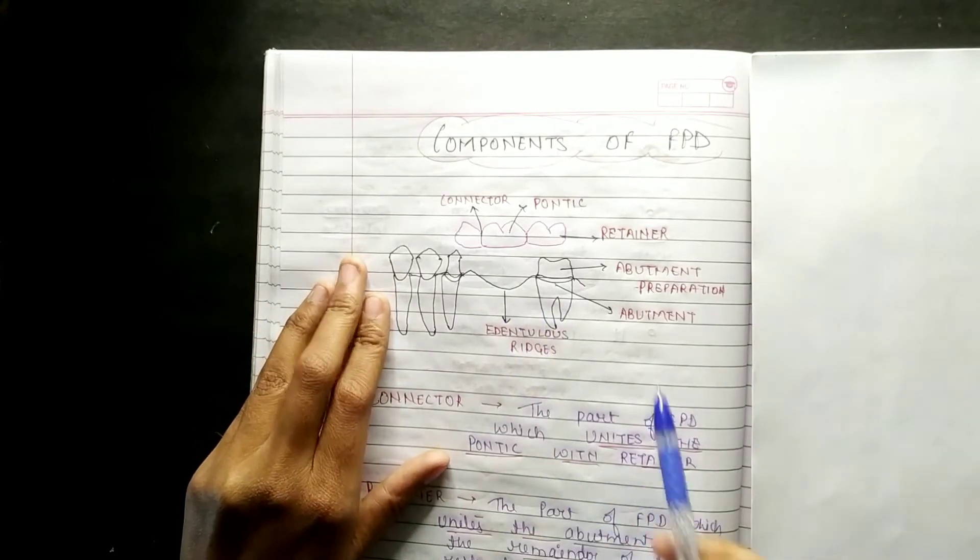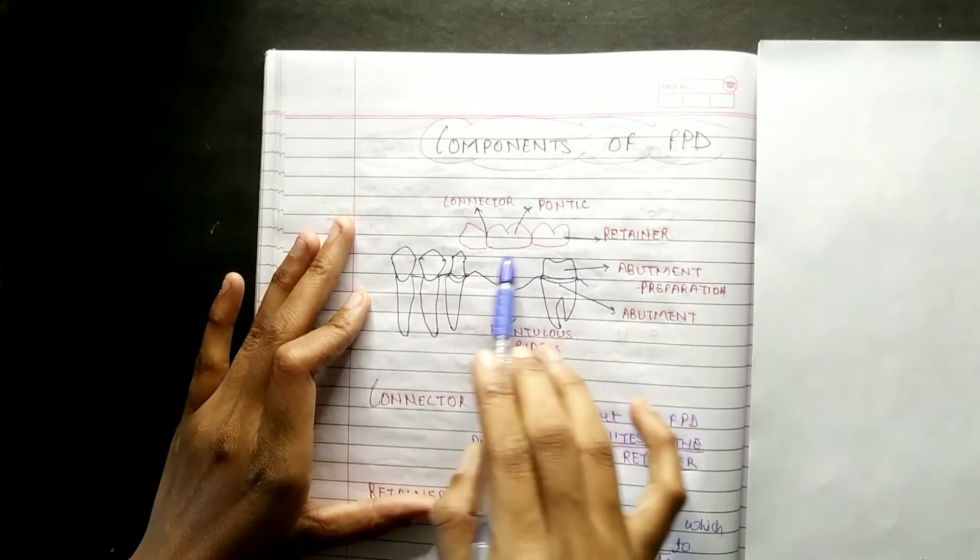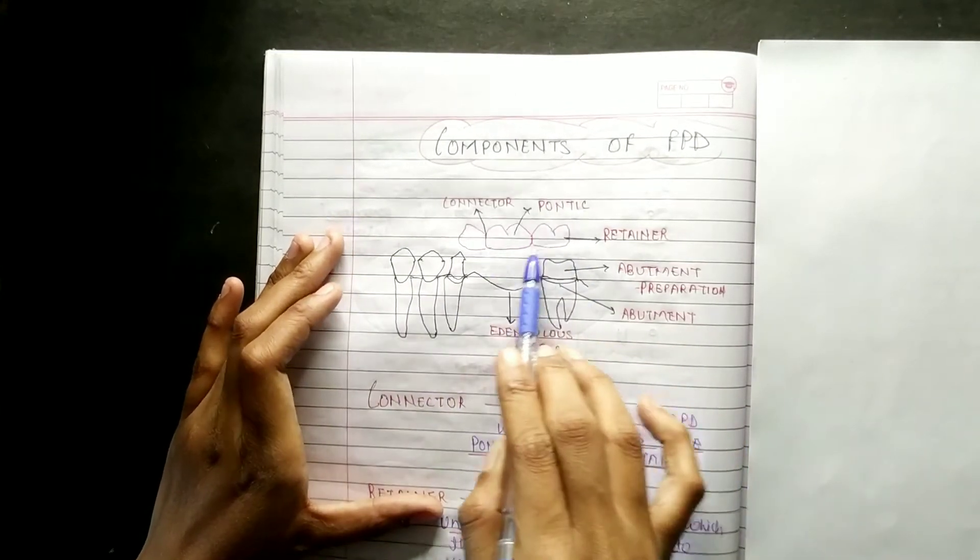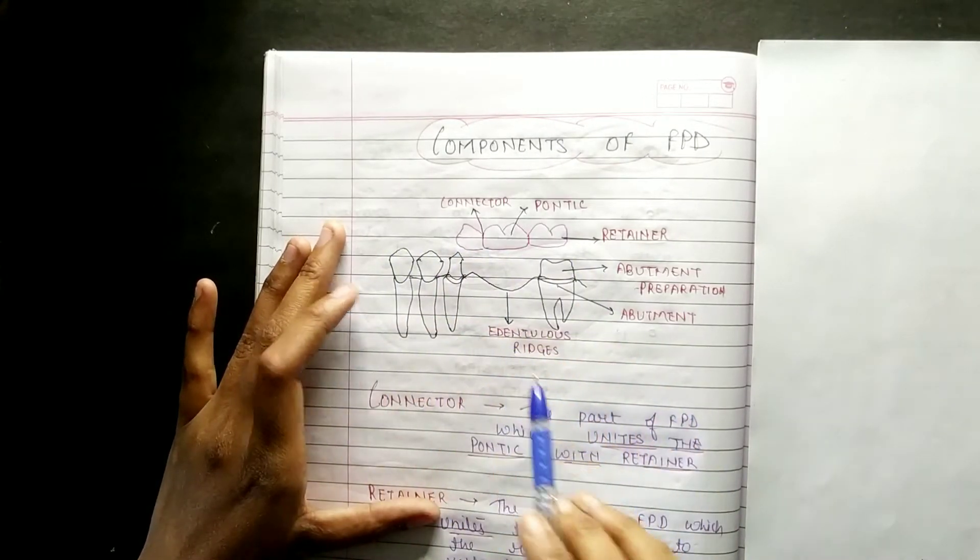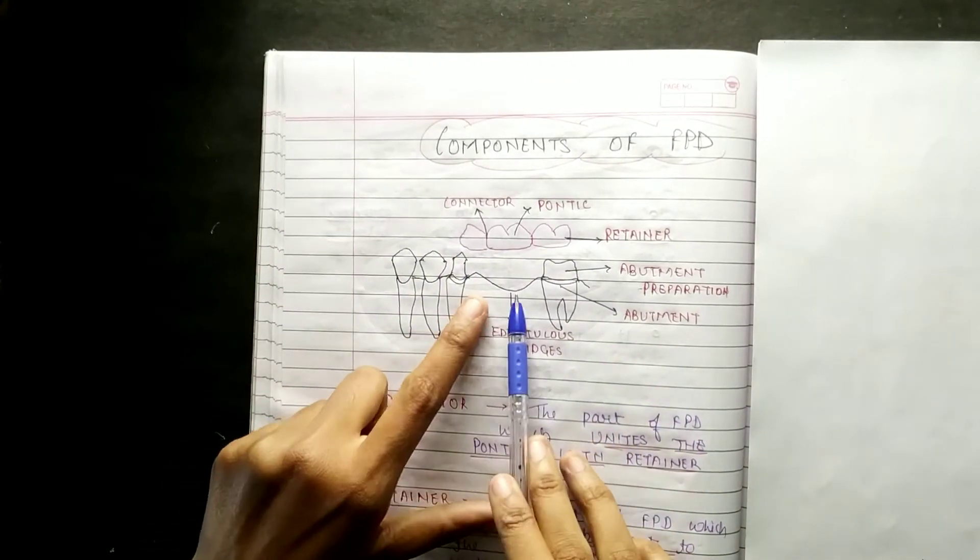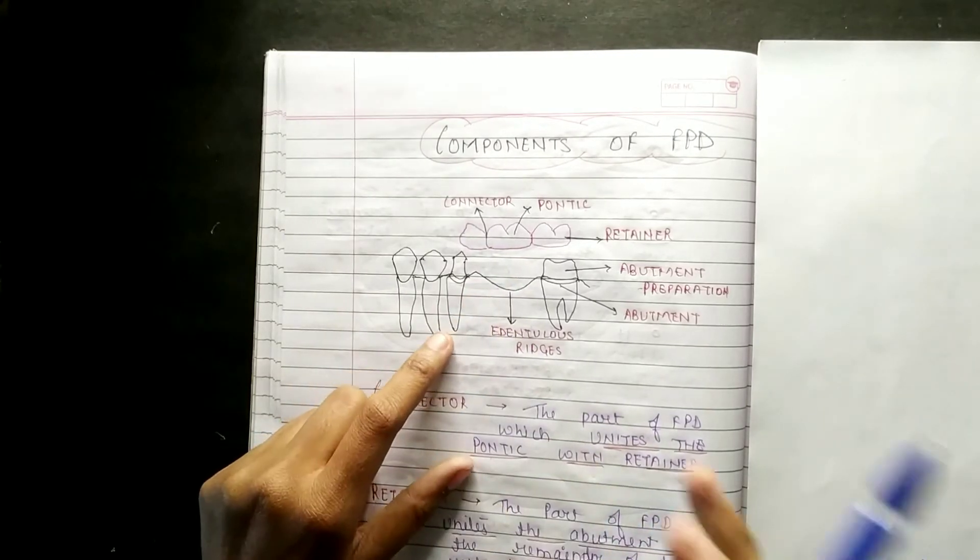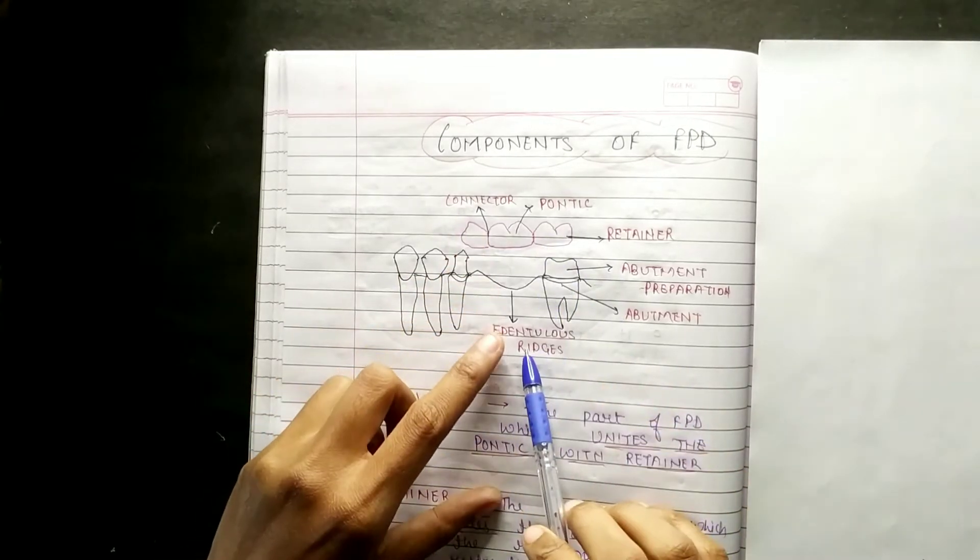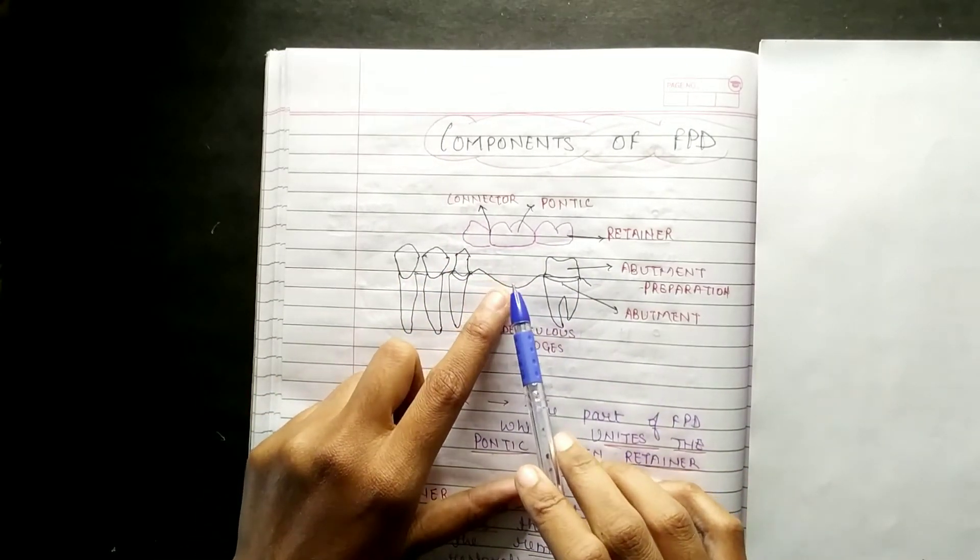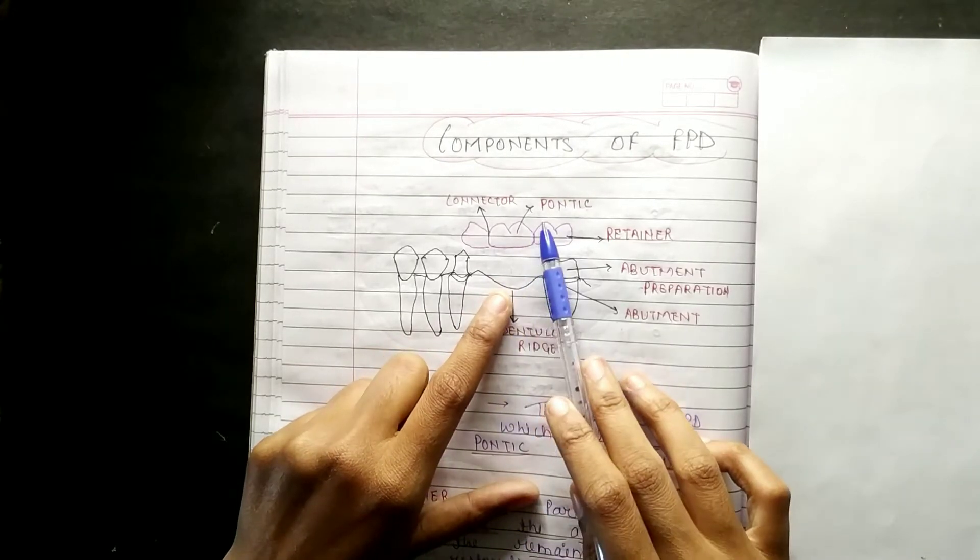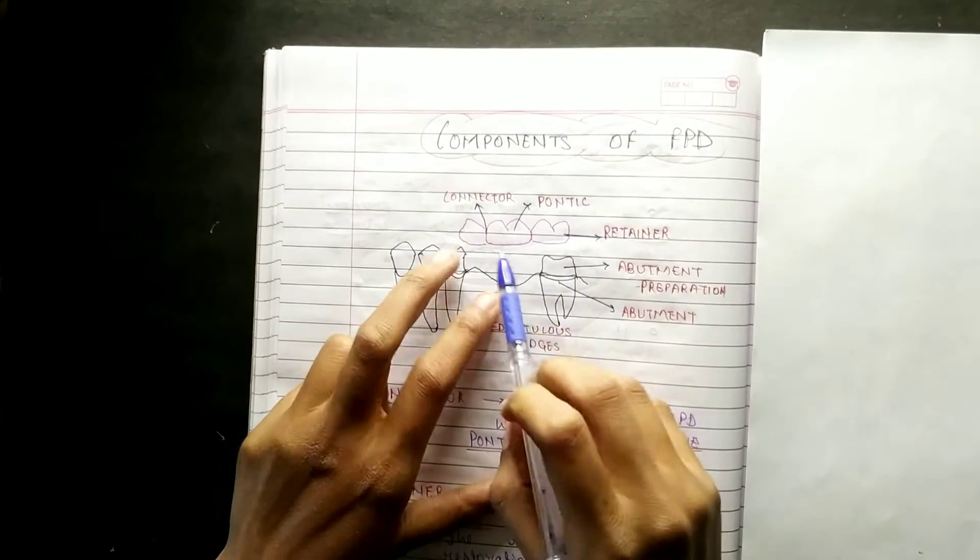first is the natural tooth. This is your natural tooth. In this natural tooth, one tooth is missing. Now we need to put a replacement on the missing tooth. We will call it Pontic. So this is the Pontic.